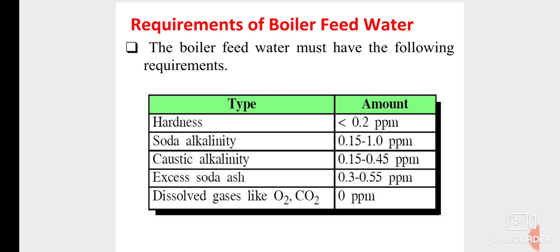The boiler feed water must have the following requirements: hardness should be less than 0.2 ppm or ideally zero. Soda alkalinity should be in the range of 0.15 to 1 ppm — above this range it will affect the boiler. Caustic alkalinity range is 0.15 to 0.45 ppm. Ppm means parts per million — one milligram of solute dissolved in one liter of solvent. Excess soda ash: 0.3 to 0.55 ppm. Dissolved gases like oxygen and carbon dioxide: 0.5 ppm. These are the basic requirements of the boiler feed water.